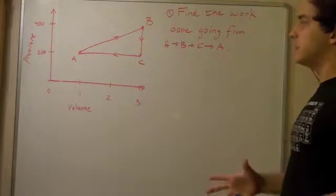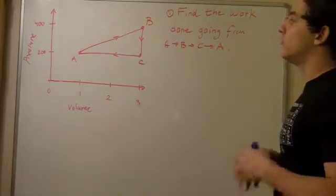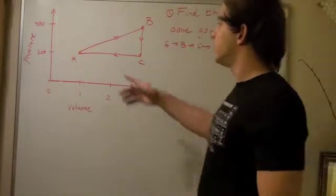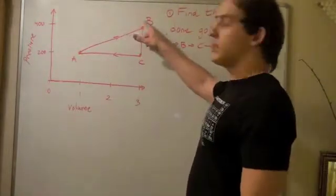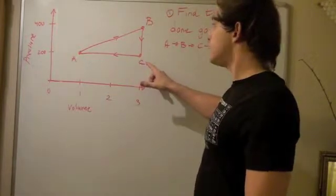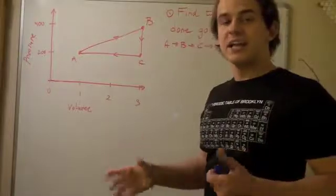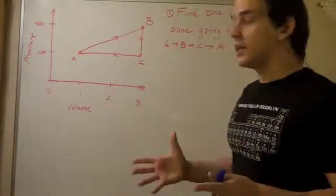Basically, we want to break this problem down into steps. We first want to find the work done going from here to here, then the work done going from B to C, and then the work done going from C to A. We want to add those guys together, and that's our net work done.